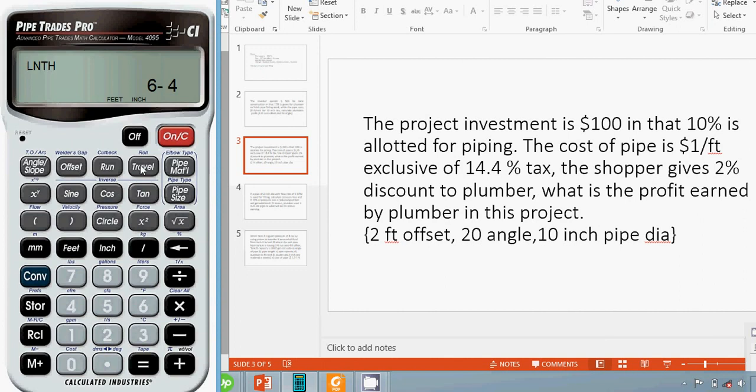We require 6 feet 4 inches, so let me store this. Let's calculate the total cost of pipe. It is $6.33. From this data, we are going to calculate the 14.4% tax amount.